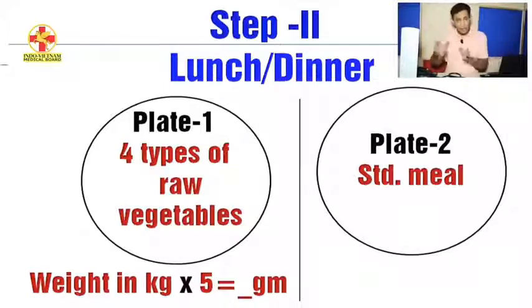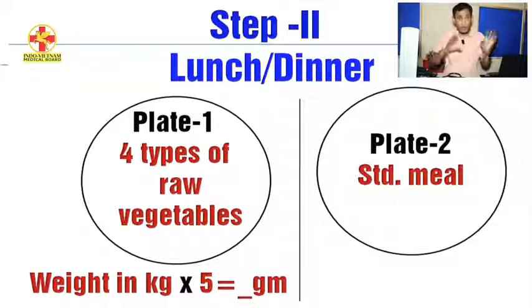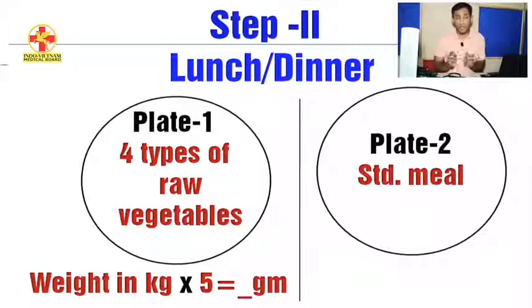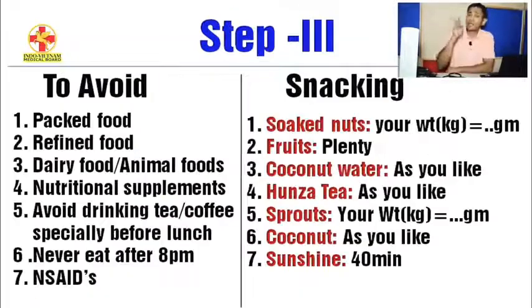So these are the three steps: breakfast, lunch, and dinner — the three main meals. Step one is breakfast, and step two covers lunch and dinner. The final step is step three.